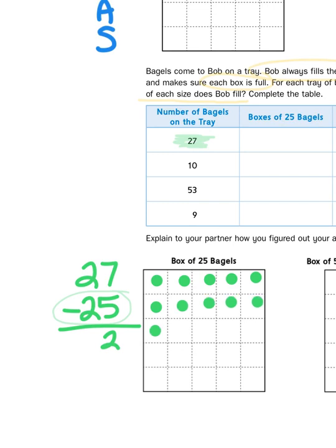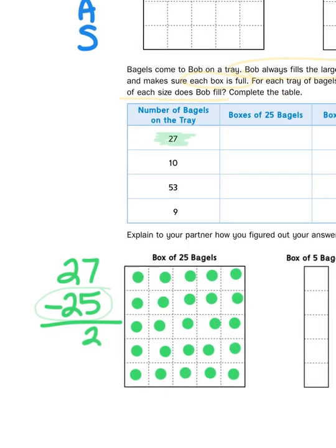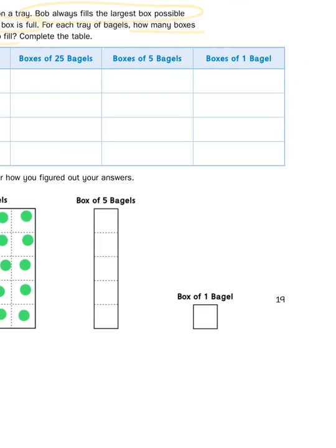Now, I have 2 bagels left over, and they need to be put into a box. So I have a choice. I could either put 2 of them into this box, or I could put 1 in 1 box, and then get a second box for 1. Like this. And then give myself another bagel. Like so. Okay?